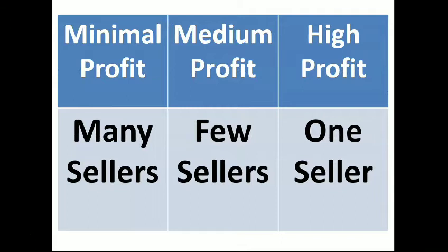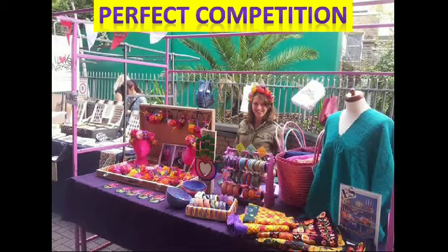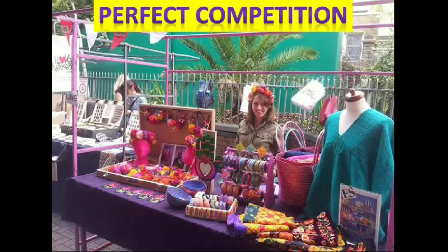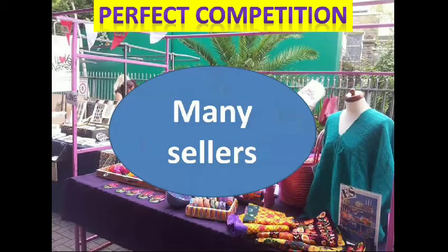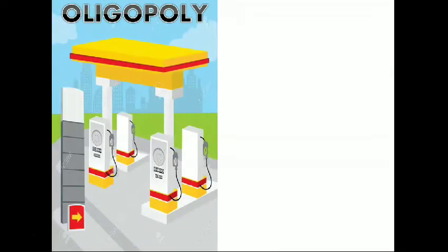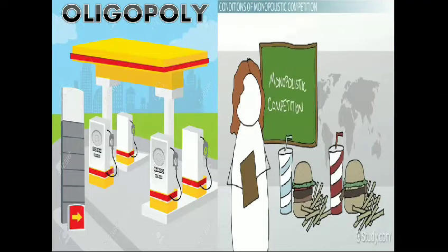Using this diagram, we have three profit levels: minimal profit, medium profit, and high profit. Under minimal profit, there are many sellers, which belongs to perfect competition or pure competition. As we can see in the market, there are many fruit stands, vegetable stands, fish vendors, or vendors that can occupy or engage in the market, just like in our public mall.